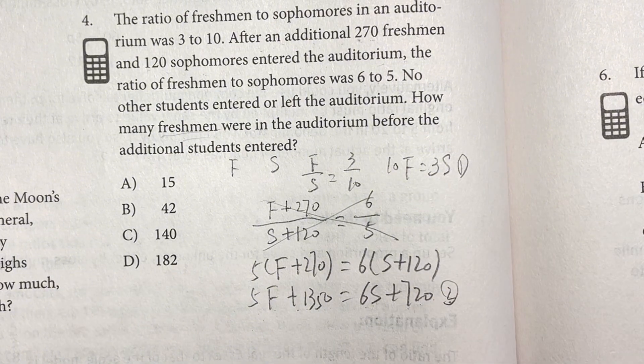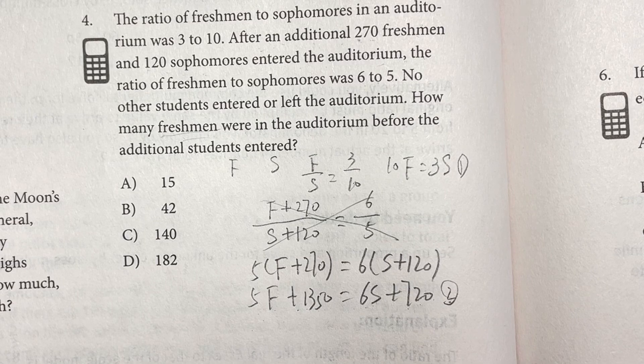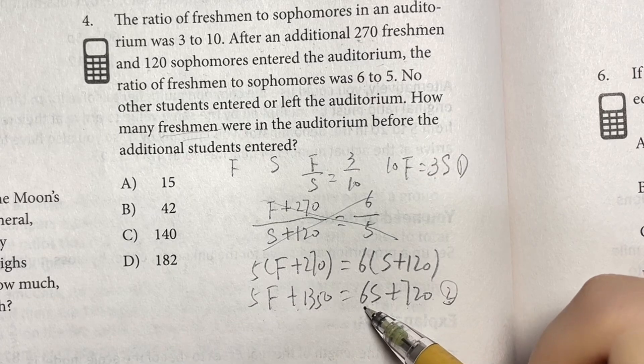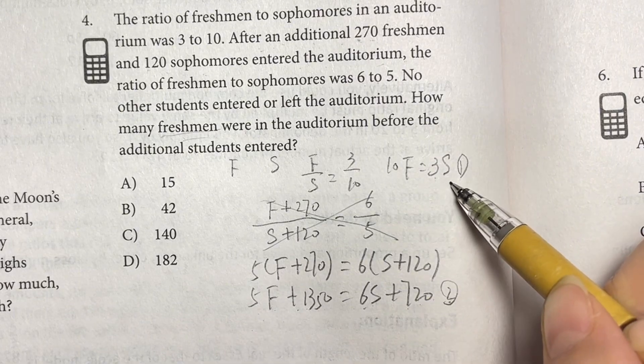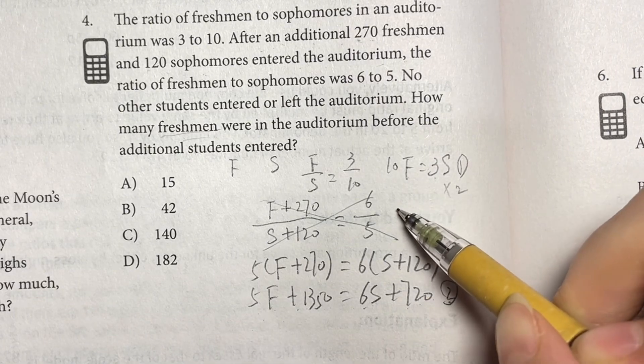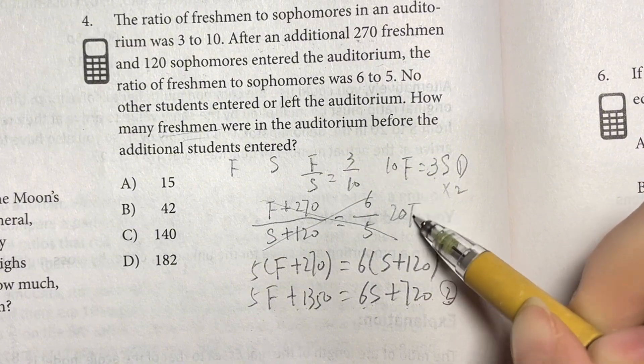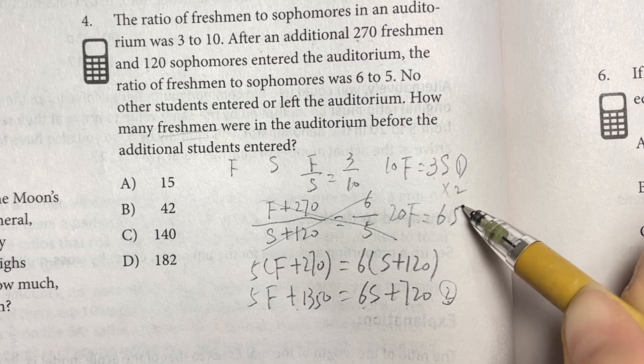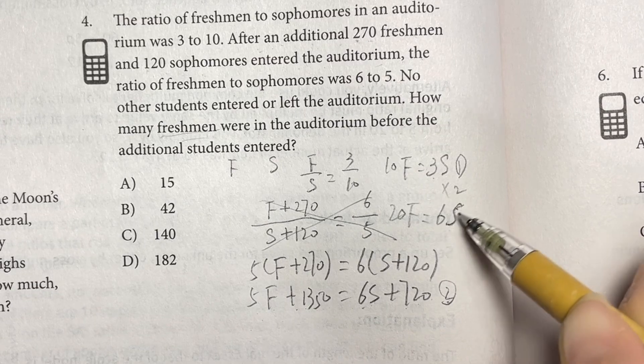Let's see what's in common here. We have 3S, 6S, how about we times 2. For this equation become 20F equal 6S, right? 6S.